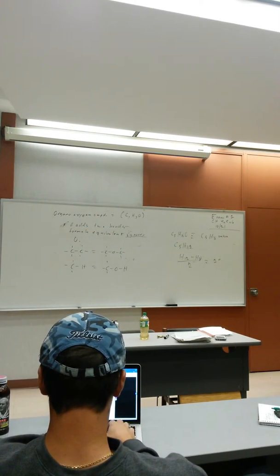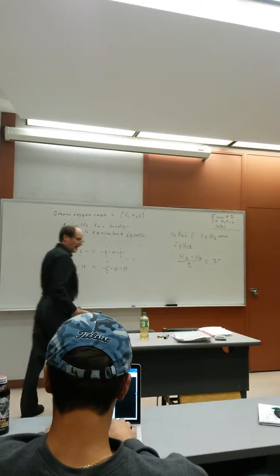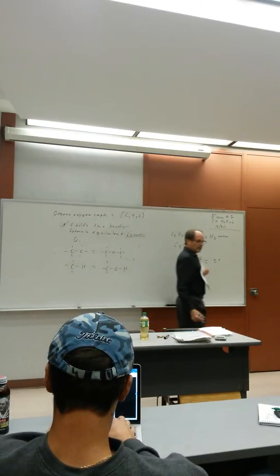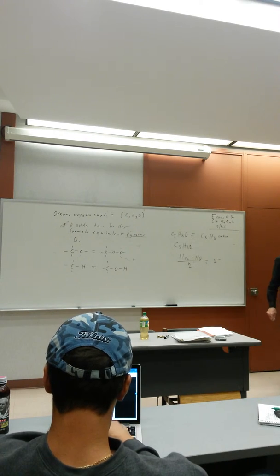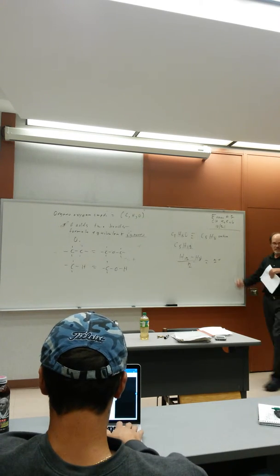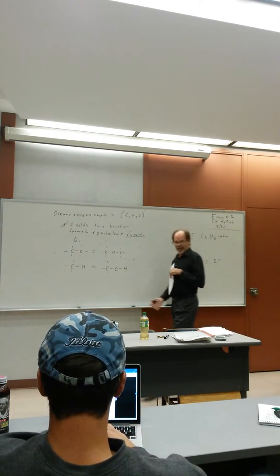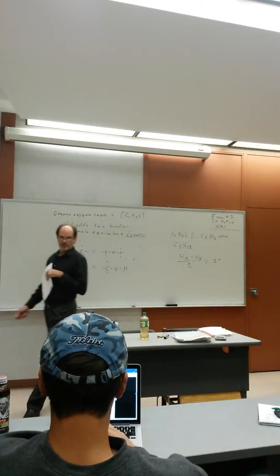So nitrogen then we subtract the hydrogen, derive the formula equivalent of hydrocarbon for the unknown. And then for oxygen we just simply ignore it. And in the case of halogens it replaces it. So halogens count as hydrogen in the unknown equivalent formula. Okay?